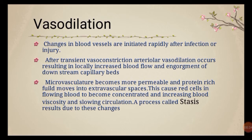After a transient vasoconstriction lasting a few seconds, arteriolar vasodilation occurs, resulting in locally increased blood flow and engorgement of the downstream capillary beds. The basic purpose of vasodilation is to increase blood flow so that white blood cells and other proteins can be delivered to the site of injury — this causes the redness and warmth of inflammation.